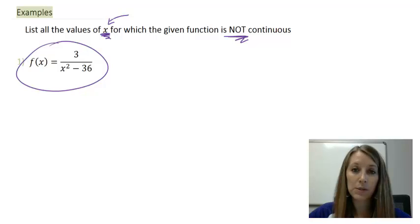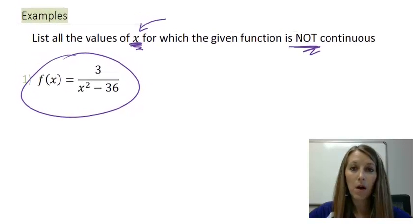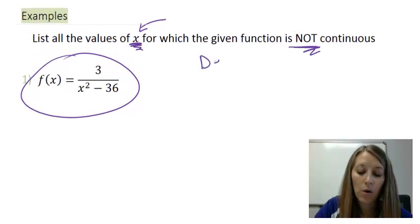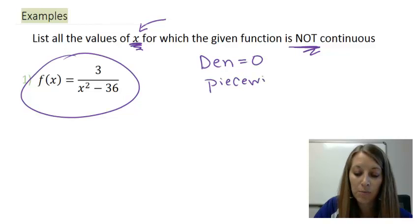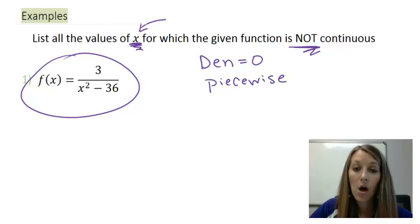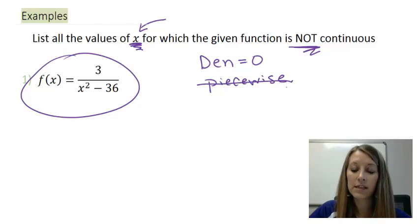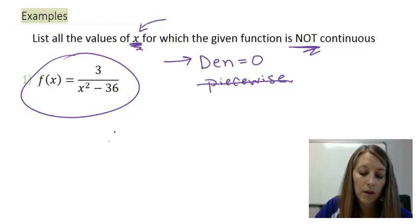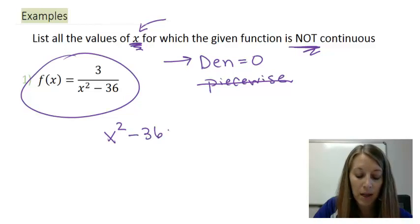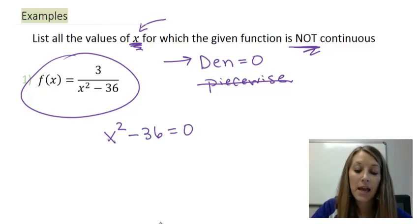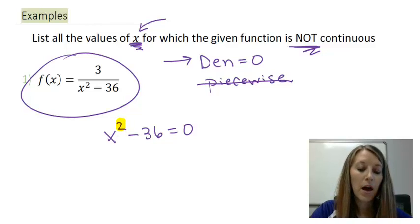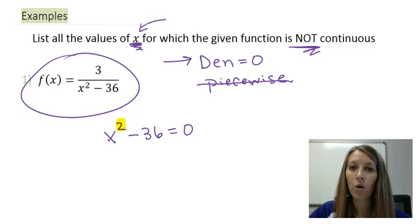When is this function — specifically 3 over x squared minus 36 — not continuous? All we have to do is figure out where the denominator is equal to zero, or when our piecewise function pieces don't match. We don't have a piecewise function here, so that doesn't apply. So all we have to look at is where the denominator is equal to zero. Let me set my denominator equal to zero. This is degree two, so I should have two answers.